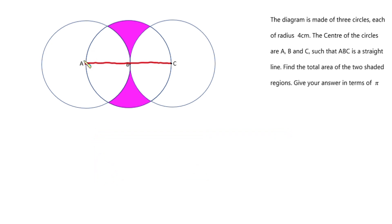Let's draw another radius from point A to the circumference of circle A. So we have this point. Then we can draw another radius from point B, which is the center of the middle circle, to the circumference of the circle. From the problem, the radii are the same, so it means that this triangle is an equilateral triangle with side 4.